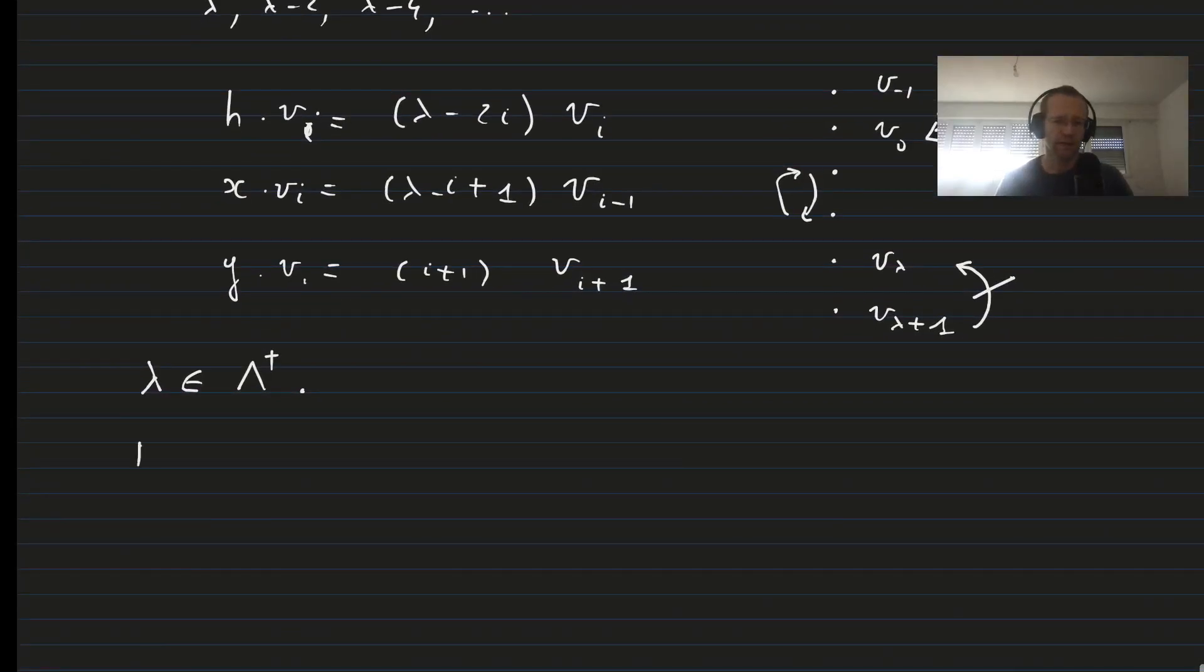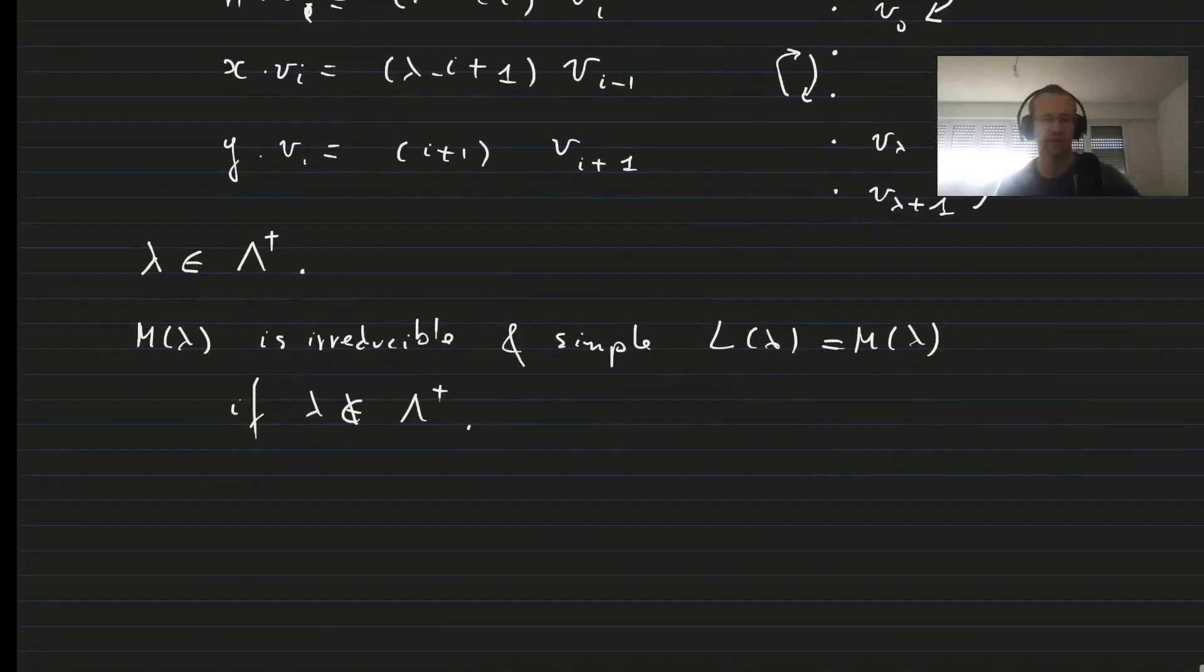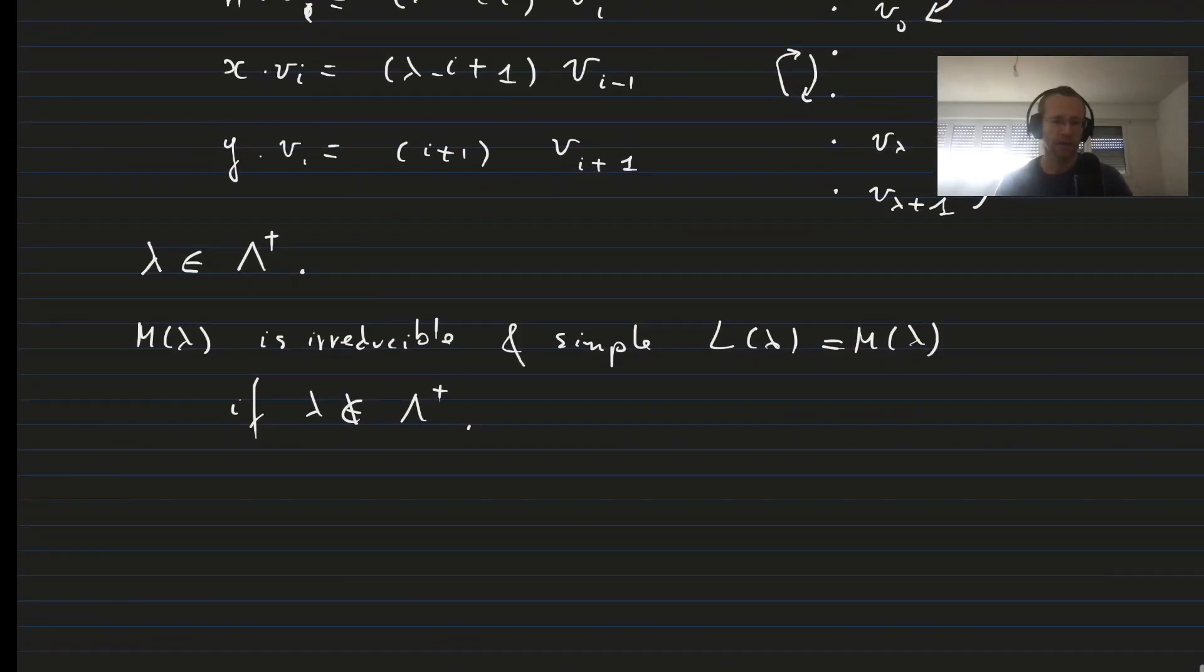So what do we have? We have that M of lambda is irreducible and simple if lambda is not an element of lambda plus. So lambda is different from 0, 1, 2, etc.